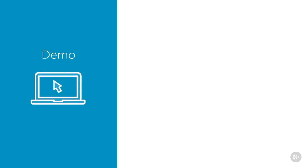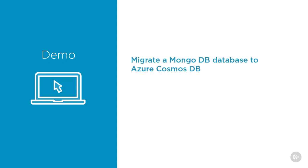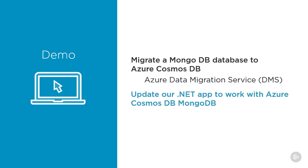We have a test MongoDB instance and we've gone through a few pre-migration steps. Now we are ready to perform the actual migration process. In this demo, we are going to migrate a MongoDB database to Azure Cosmos DB using Azure Data Migration Service, or DMS. After the migration is done, I'll update the connection string in our .NET application and make sure it continues to work with Cosmos DB. Let's get started.